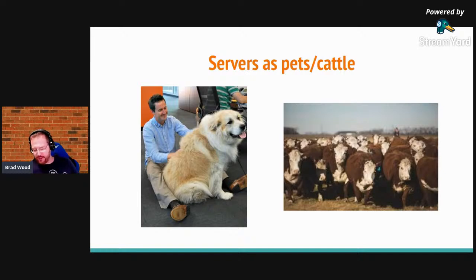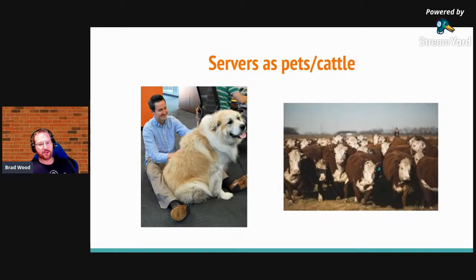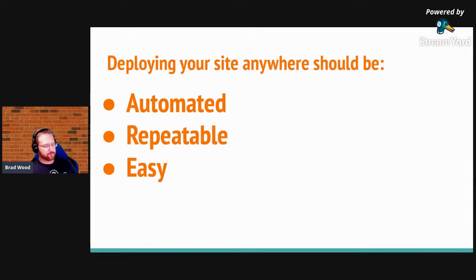There's an analogy that's fairly old now — the idea of the difference between treating servers as pets versus cattle. The idea is that typically you have a set number of servers that take days, maybe weeks, to build out. But a rancher managing hundreds of cattle might buy and sell 20 at a time. The goal with servers is to be able to acquire or get rid of them without a lot of overhead — it shouldn't take weeks to spin up a new server.